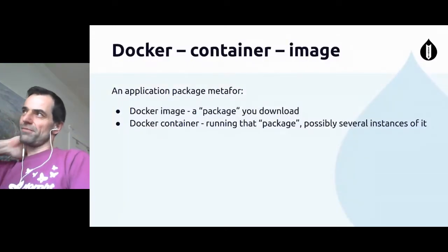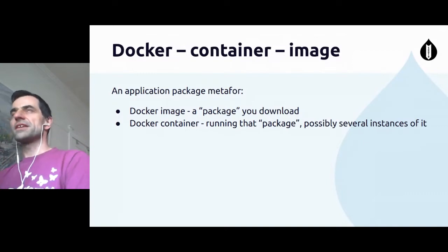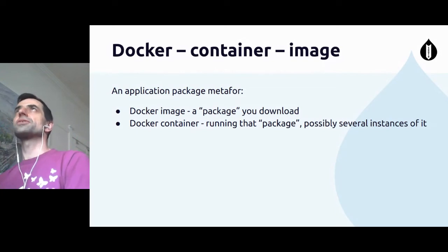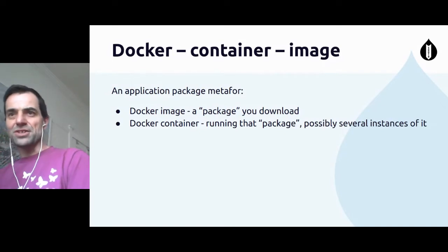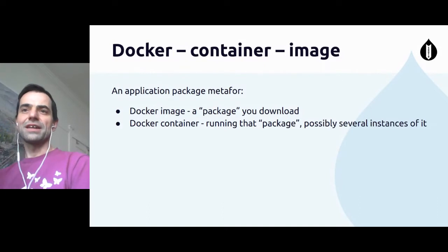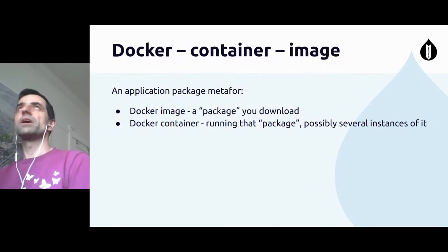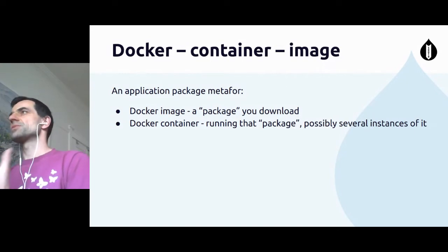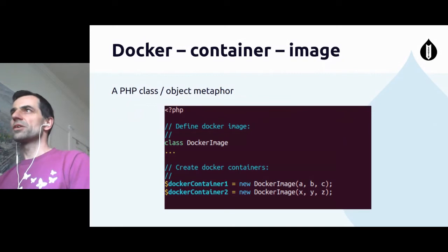I just came up with a little metaphor for how to think of a Docker image. A Docker image is like a binary — a package you download. Say you download Firefox on your Mac, you download that package. And then a Docker container is that package running — the program running — and it can run multiple times. When you run Firefox, you install it and run it, and you can run it multiple times if you have multiple profiles. So that's basically how a Docker image and Docker container work.